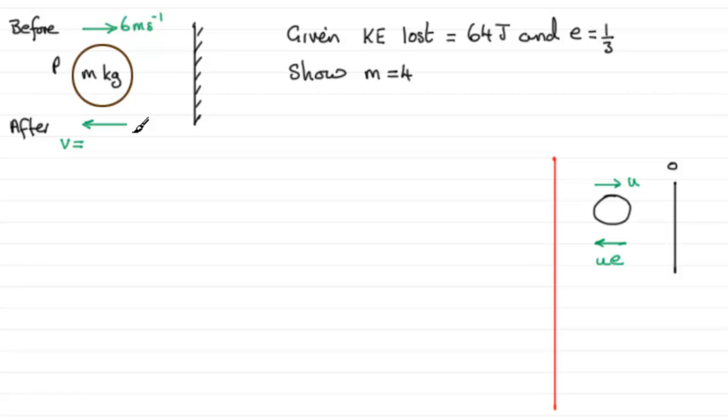okay so on that basis then what we've got here is that if E equals a third then this particle was moving with a speed of six, coefficient of restitution is a third so it'll be six times a third which ends up equaling two meters per second is the speed that it's going to move after hitting the wall